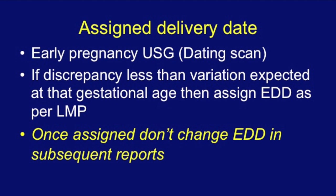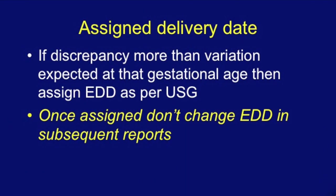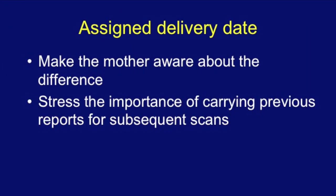At the early pregnancy dating scan, the delivery date can be assigned very accurately. If the discrepancy is less than the variation expected at that gestational age, assign the EDD as per LMP. Once assigned, do not change the EDD in subsequent reports. If the discrepancy is more than the expected variation, assign the EDD as per ultrasound. Make the mother aware of the difference and stress the importance of carrying previous reports for subsequent scans.